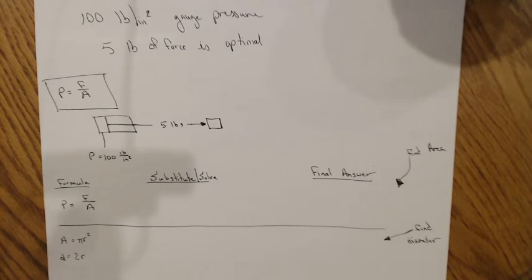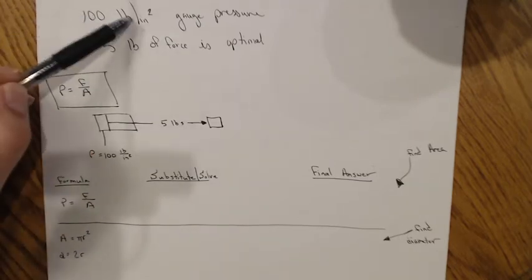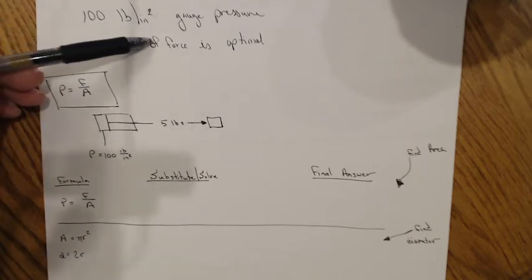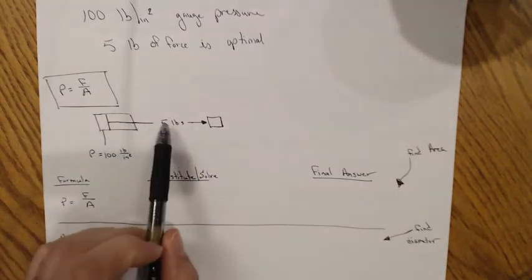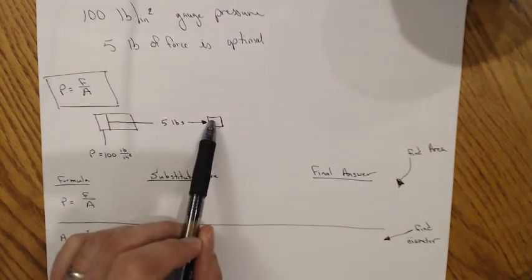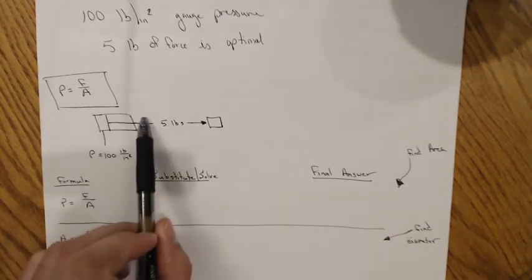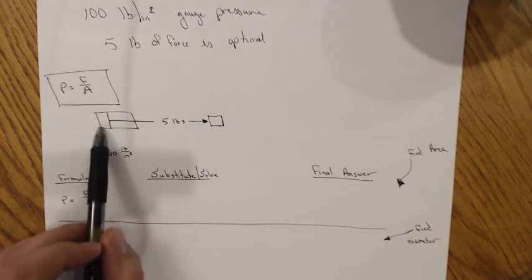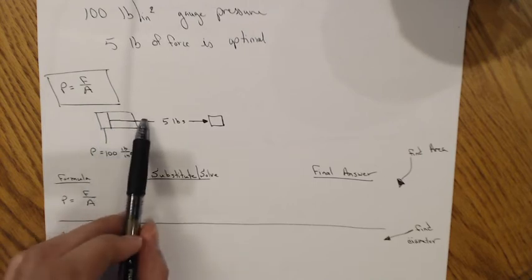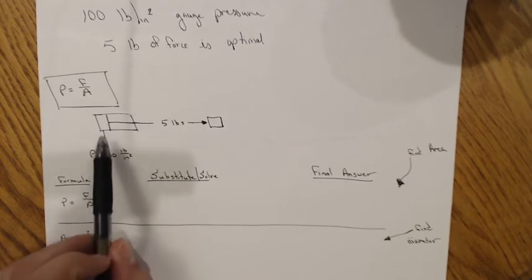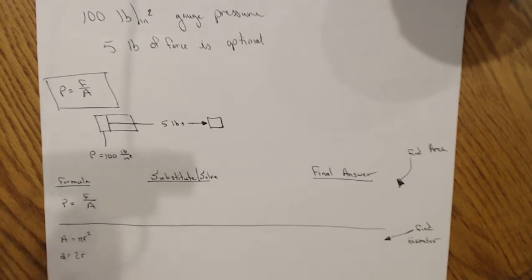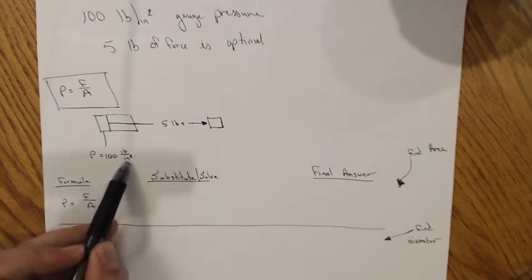So the first one I want to talk about is from the practice problems I've given to my students. We have 100 pounds per square inch gauge pressure and we want 5 pounds of force. That's going to be optimal to be placing a sticker onto a product. So I drew my cylinder and I have 5 pounds of force going over to my product. I've labeled over here this is the part where I'm going to be filling up to move this cylinder or to move the actuator, and it's going to be 100 pounds per square inch or psi.